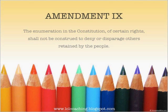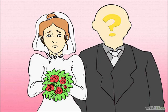The Ninth Amendment is a catch-all amendment. It says the enumeration in the Constitution of certain rights shall not be construed to deny or disparage others retained by the people. This means that things not listed in the Constitution and not prohibited by law are rights given to citizens — for example, the right to choose who you marry and to choose your own career.